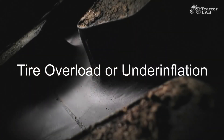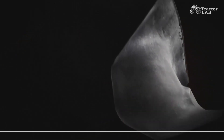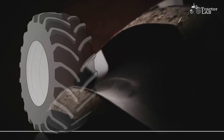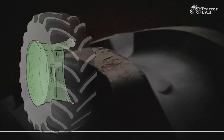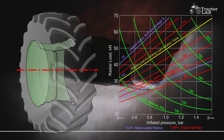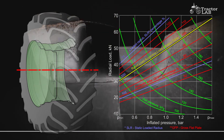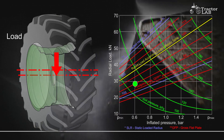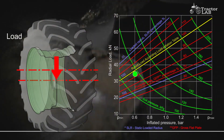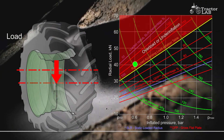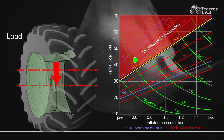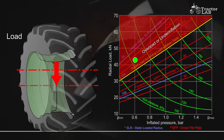Tire overload or under-inflation: overloading and under-inflating a tire both have the effect of over-deflecting it. Under these conditions the tread on the tire will wear rapidly and unevenly, particularly in the shoulder area. Radial cracking in the upper sidewall area will be a problem with under-inflated bias drive tires in high torque applications.